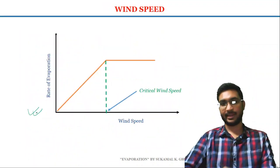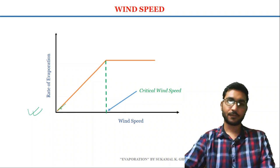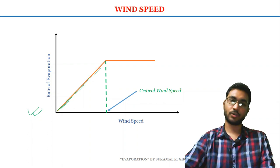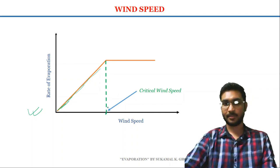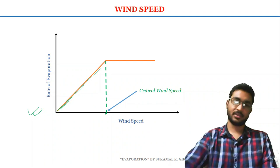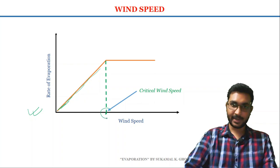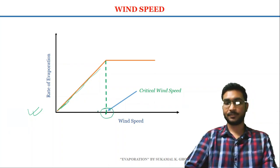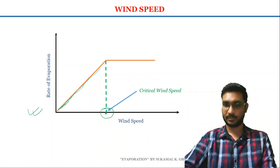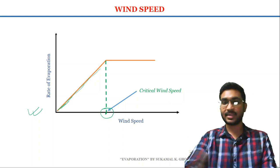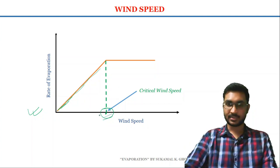From the figure, you may understand how wind speed affects evaporation. Initially, with the increase of wind speed, the rate of evaporation also increases. But at a certain wind speed — known as the critical wind speed — any further increase in wind speed does not change the evaporation rate, because that wind speed is large enough to remove all the water vapor accumulated in the zone of evaporation.